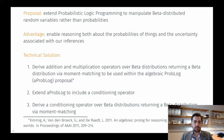In terms of technical contribution, we derive additional multiplication operators on beta distributions returning a beta distribution via moment matching, and we use this as part of the algebraic ProbLog (AProbLog) proposal. We also extend AProbLog to include a conditioning operator necessary for a variety of probabilistic reasoning, and we derive a conditioning operator on beta distributions returning a beta distribution via moment matching.